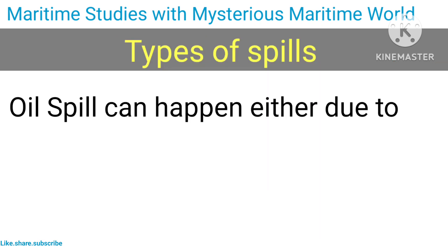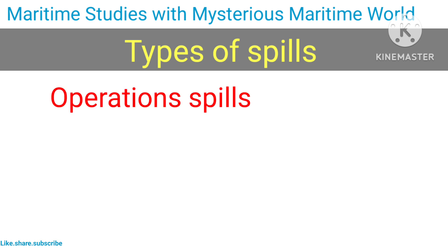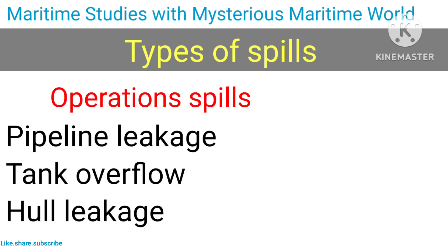Types of spills: an oil spill can happen either due to operations or due to casualties. Operational spills include pipeline leakage and tank overflow.